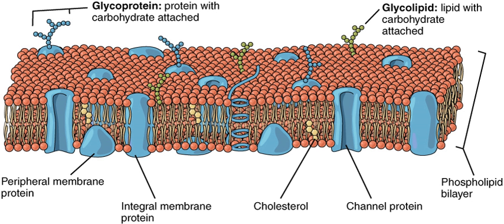Particles required for cellular function but unable to diffuse freely across a membrane enter through a membrane transport protein or are taken in by endocytosis, where the membrane allows a vacuole to join onto it and push its contents into the cell. Many types of specialized plasma membranes can separate the cell from its external environment: apical, basolateral, presynaptic and postsynaptic ones, membranes of flagella, cilia, microvillus, filopodia and lamellipodia, the sarcolemma of muscle cells, as well as specialized myelin and dendritic spine membranes of neurons. Plasma membranes can also form supramembrane structures such as caveolae, postsynaptic density, podosome, invadopodium, desmosome, hemidesmosome, focal adhesion, and cell junctions. These types of membranes differ in lipid and protein composition.